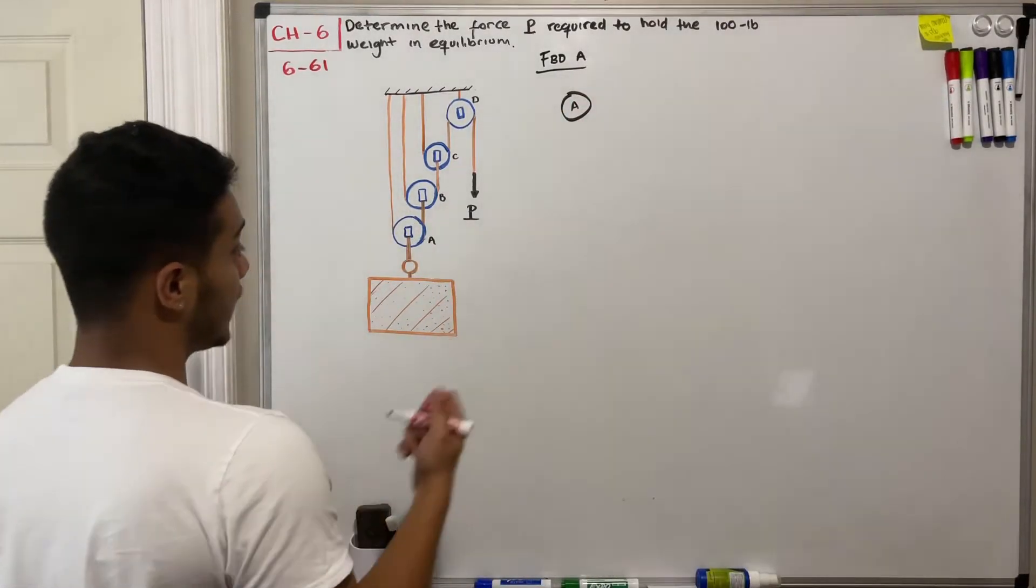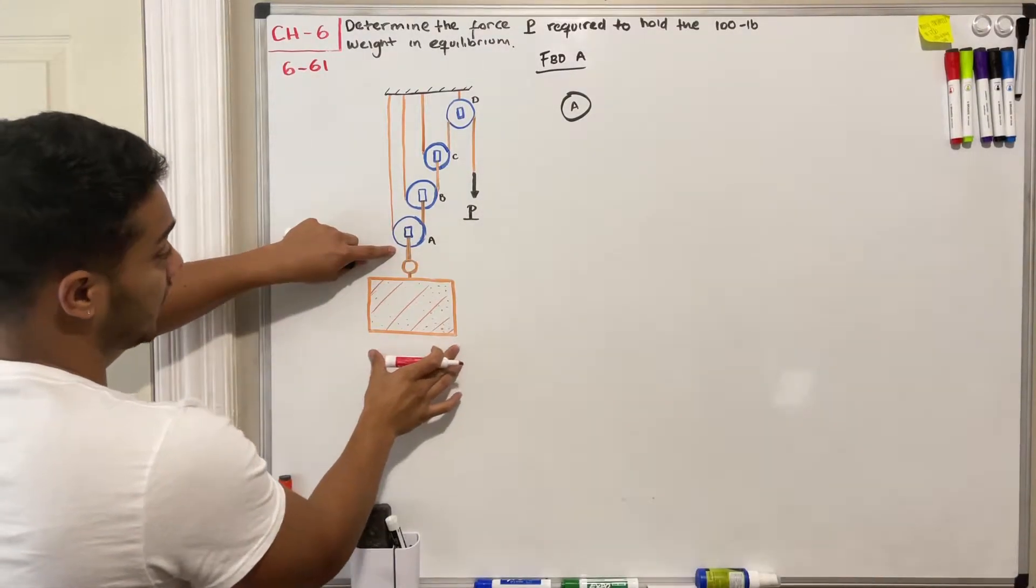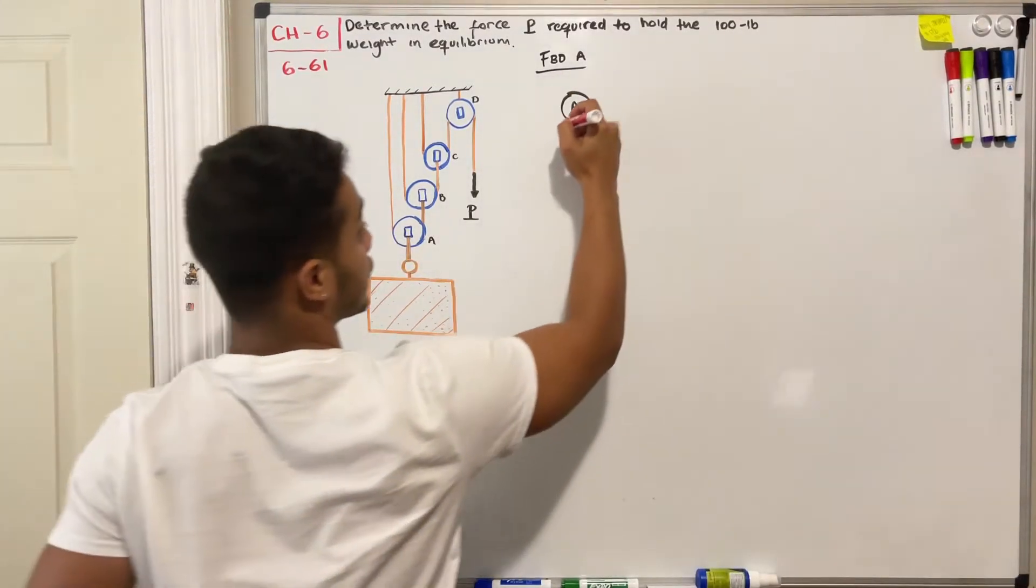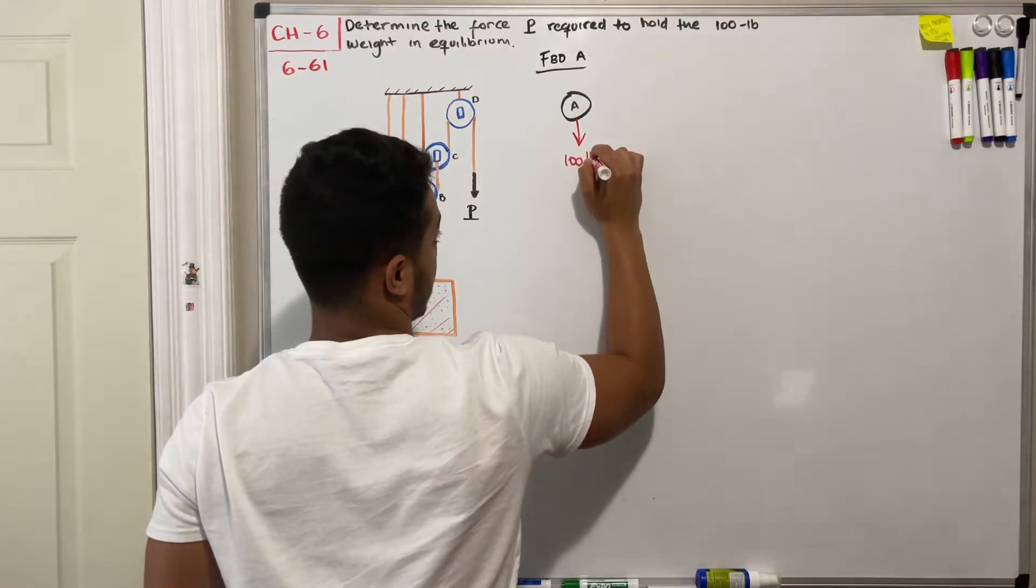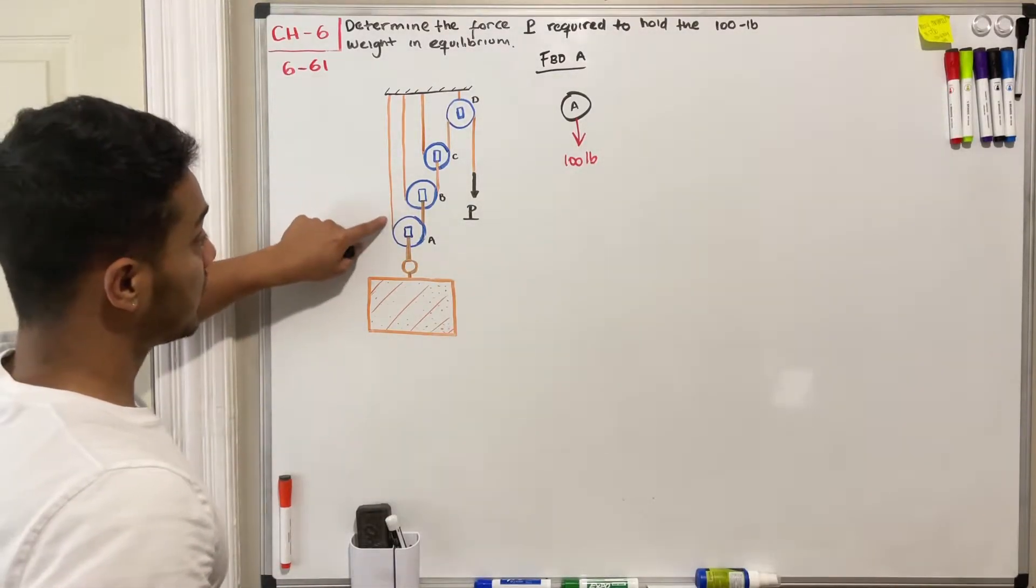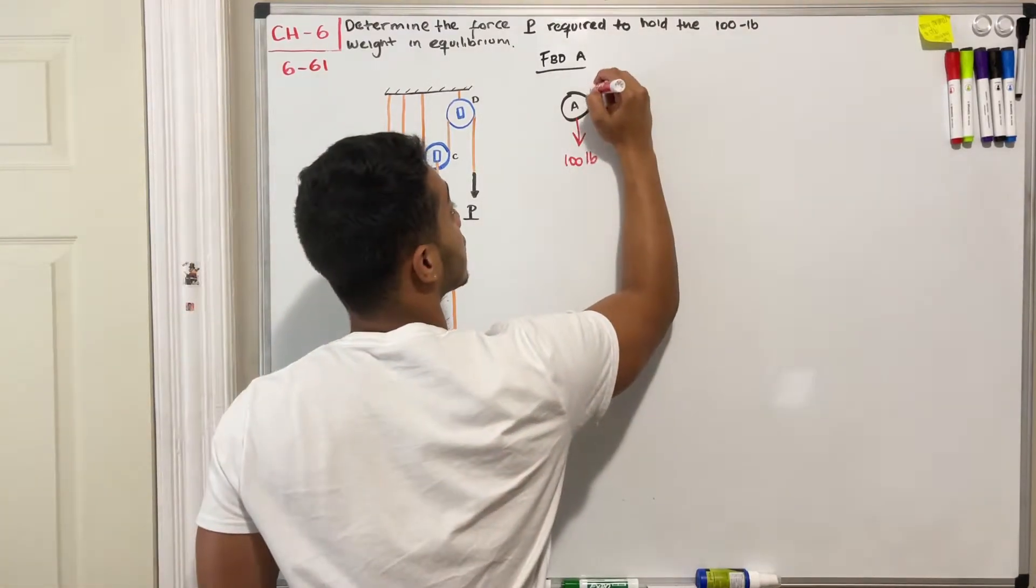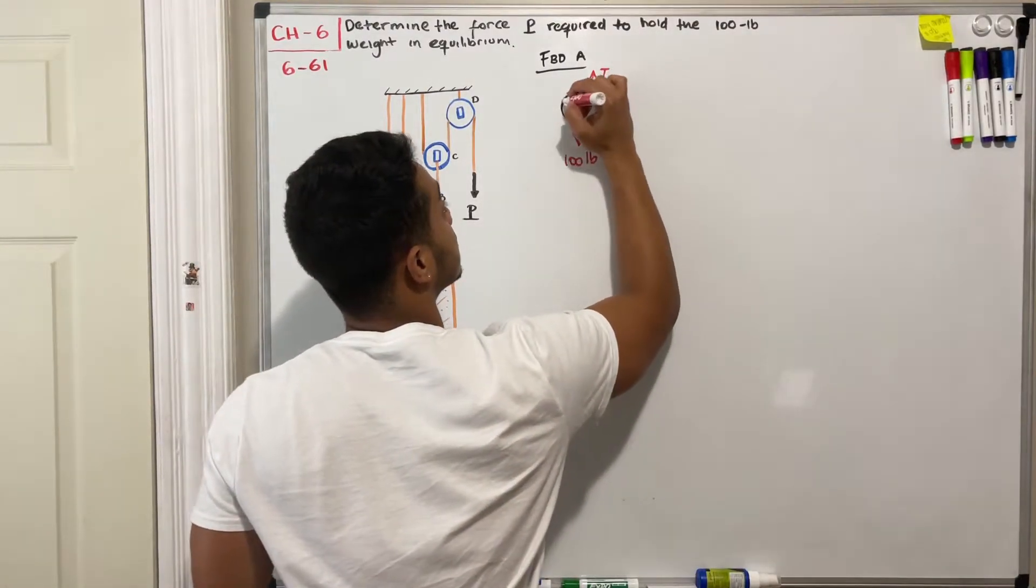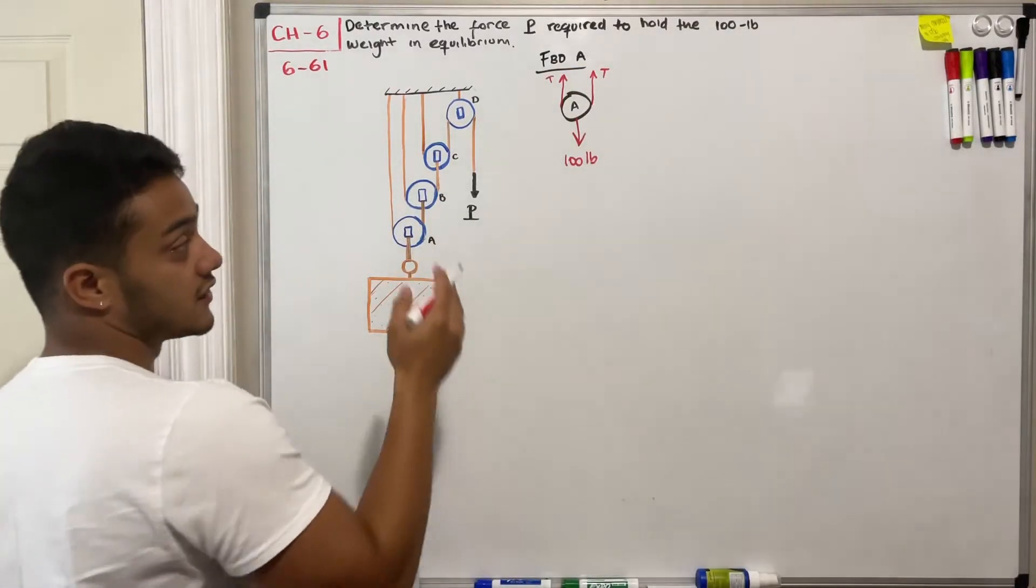For my pulley A I have the weight of our crate in here that is equal to 100 pounds going downward. I'm going to draw a force going downwards. Then I have the tension going up on this side and then the same tension going up on here. So I'm going to call them T, and since they are the same, T and T.